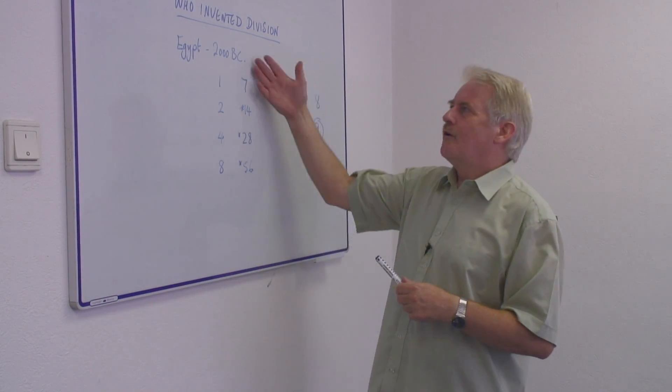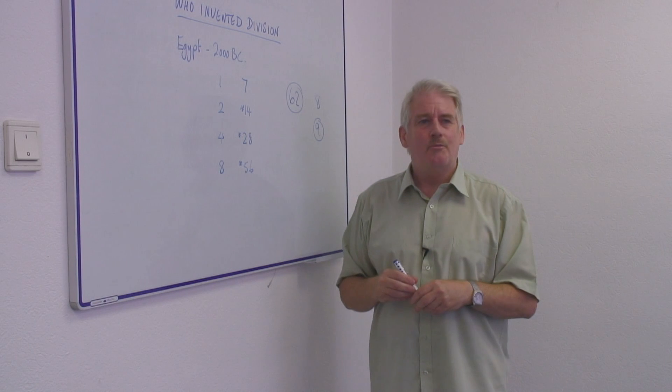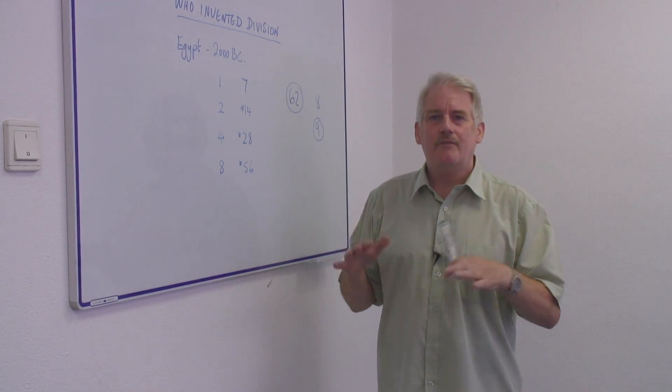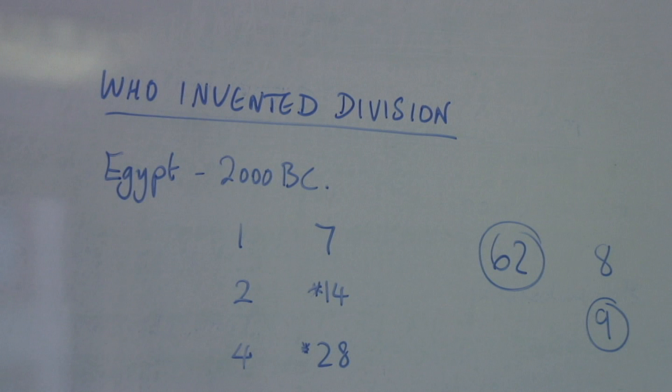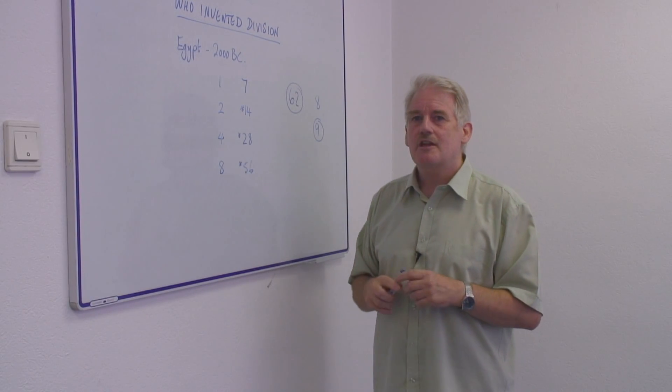So, division was not invented in Egypt, almost certainly. It would have been invented before the Egyptians, but it was formalized in a certain way in Egypt, nearly four thousand years ago.